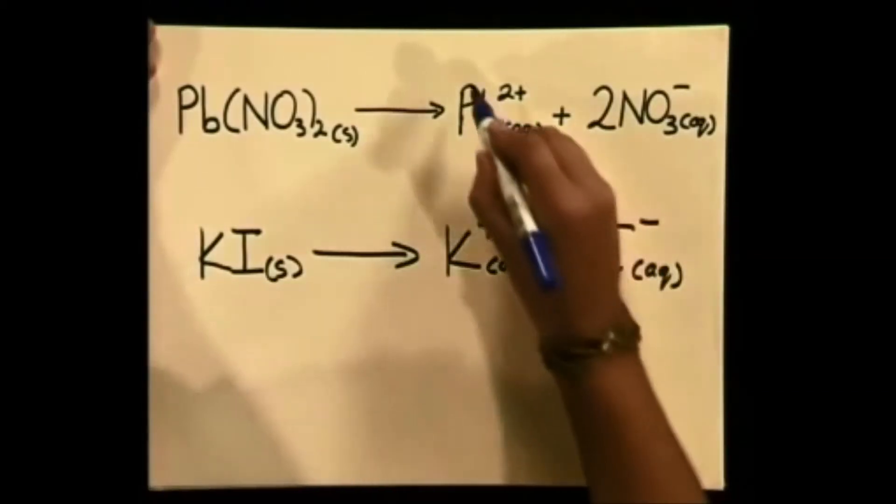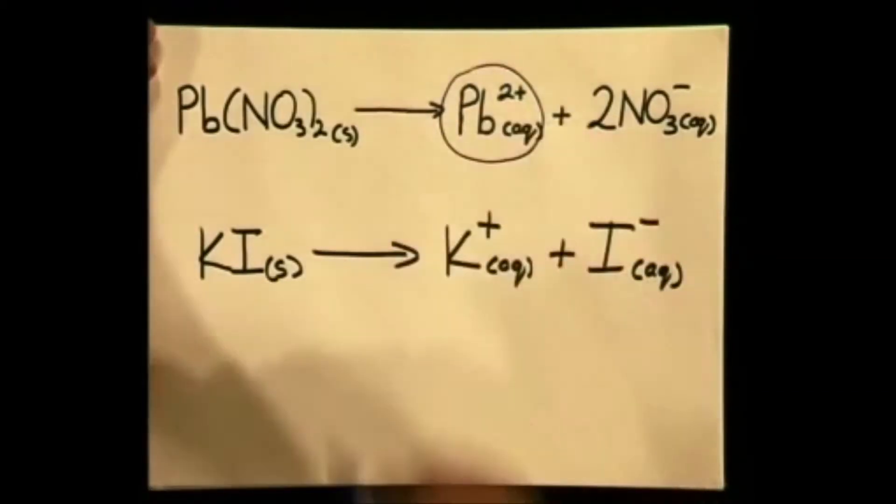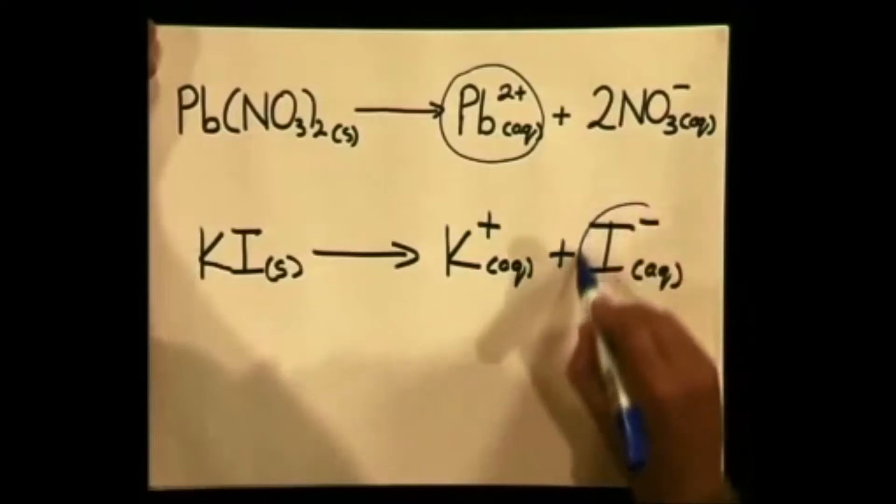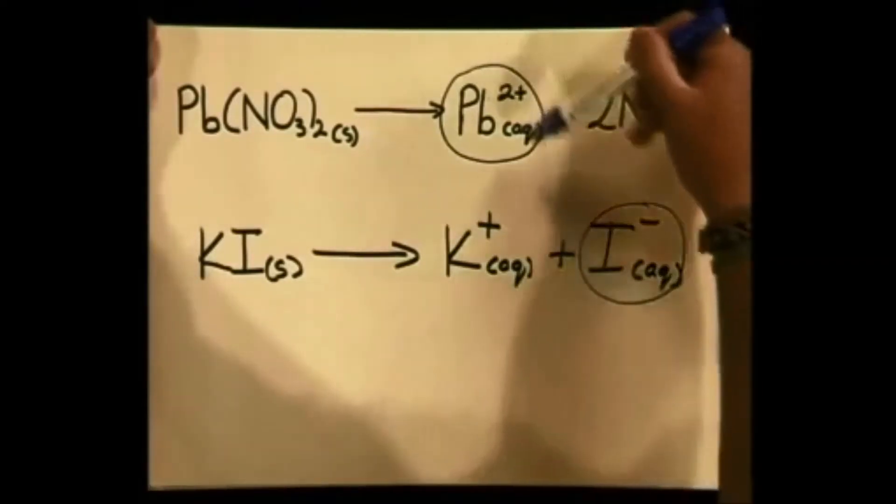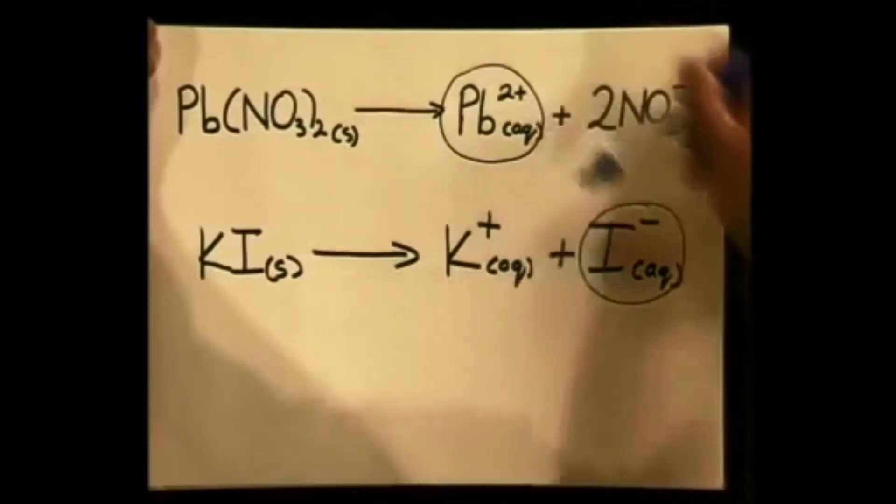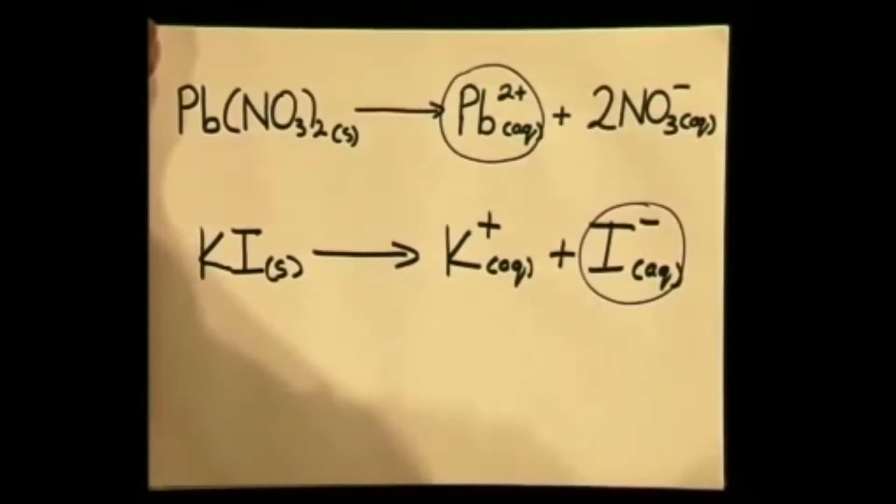Can you see that when lead cations are attracted to the iodide anions, they join together to form a new insoluble substance called lead iodide? This is the yellow precipitate. Now what about the potassium ions and the nitrate ions in solution? Well, they will attract each other, but as you know from our solubility rules, all nitrates are soluble, and therefore the ions will remain in aqueous solution.